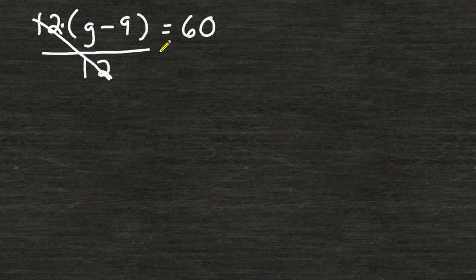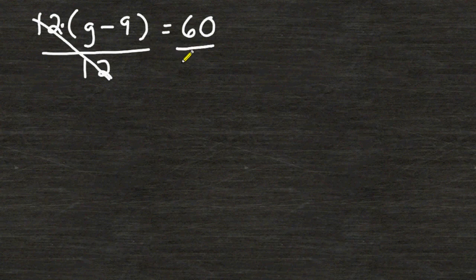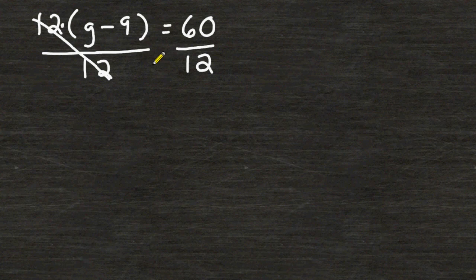But remember, whatever you do to one side of your equation you must do to the other side. We call that balancing our equation. Now on the left hand side of our equation we still have g take away 9.